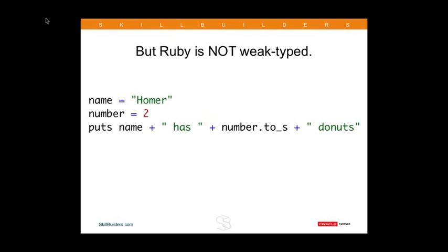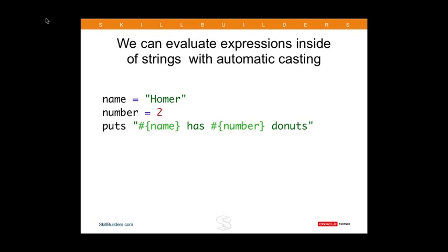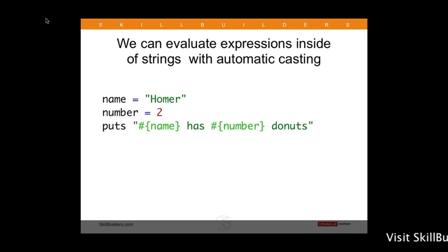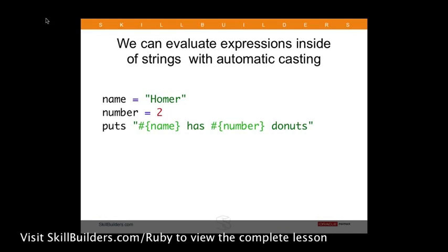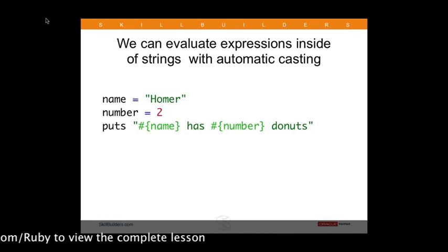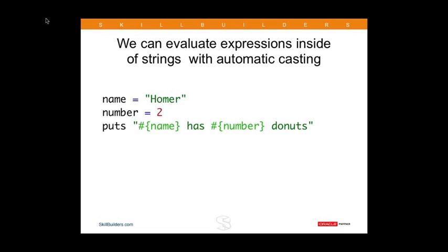When we want to output something like 'Homer has two donuts', we need to convert the number to a string so we can add it to the rest of the strings in the sentence. If we don't do that, we'll get an interpreter error and the program will halt. This is such a common pattern in string concatenation that we use a shortcut in Ruby. Ruby gives us the ability with double-quoted strings to evaluate expressions — either putting out the value of a variable or placing complex expressions or function calls inside the string. We use the pound sign and curly braces syntax to do that, and this automatically casts the result to a string.